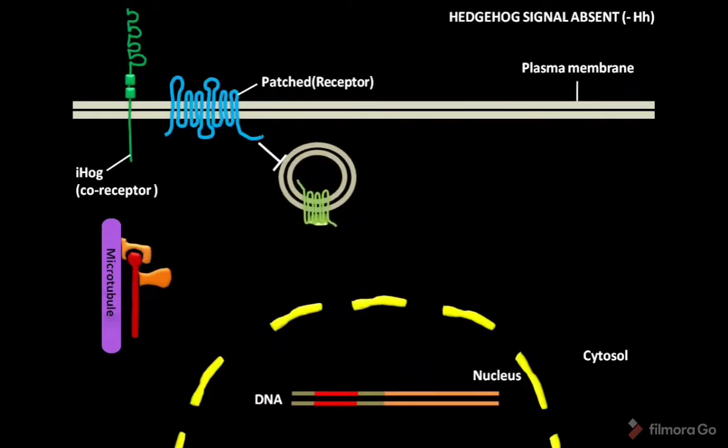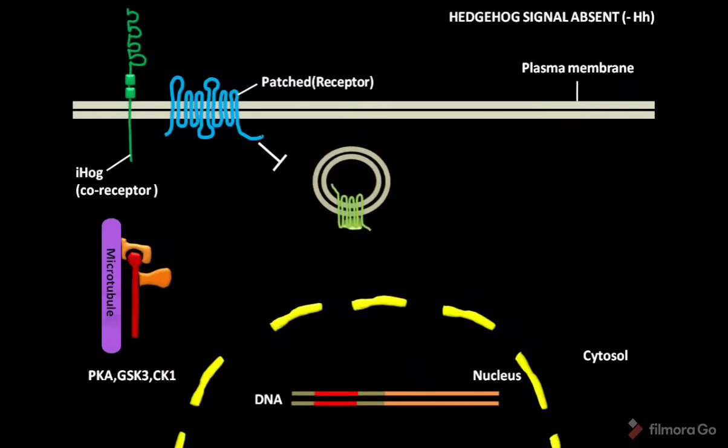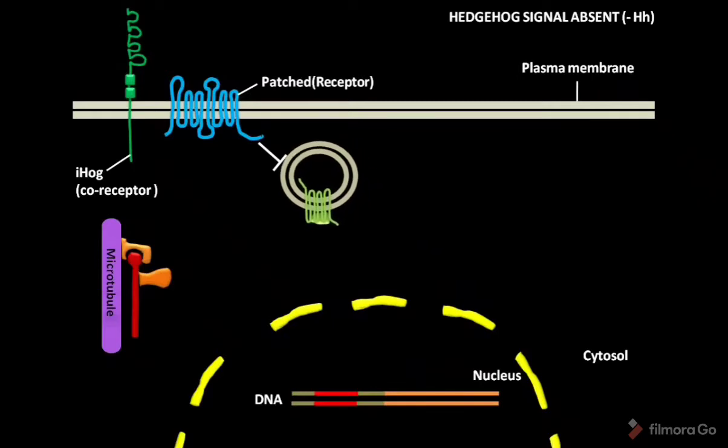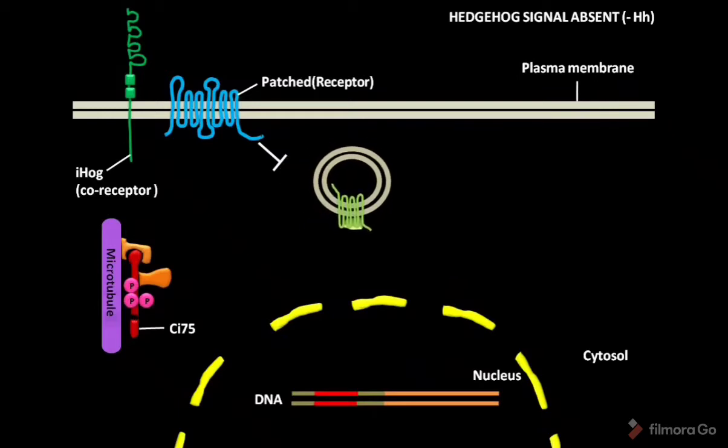COSTAL2 recruits 3 other serine-threonine protein kinases like PKA, GSK3 and CK1 which phosphorylate CI155. Phosphorylated CI155 is then ubiquitylated and proteolytically cleaved or degraded in the proteasome to form transcriptional repressor called CI75. Then the CI75 translocates to the nucleus.